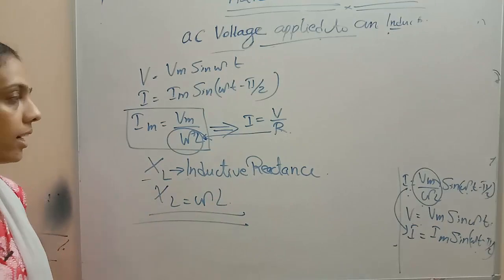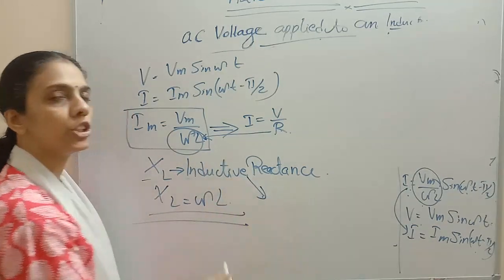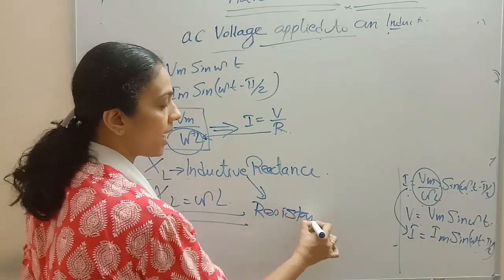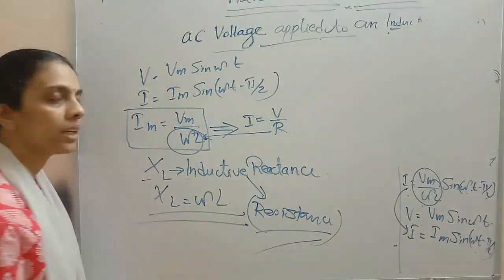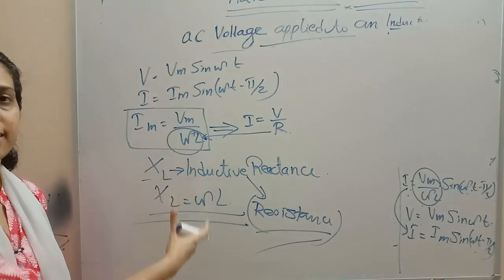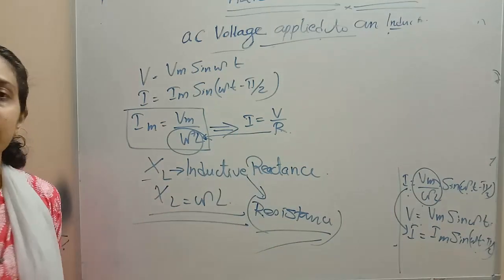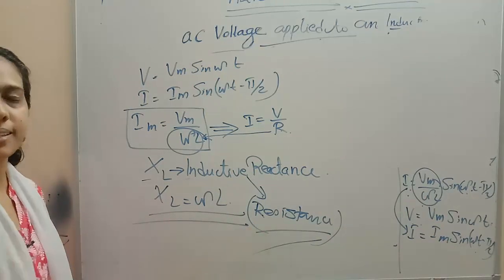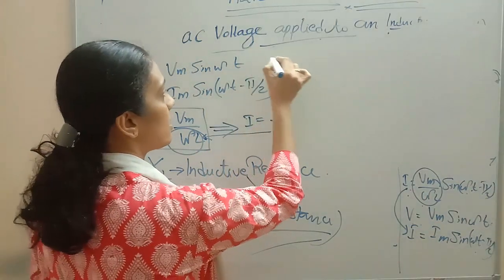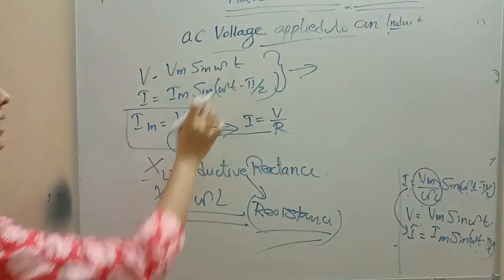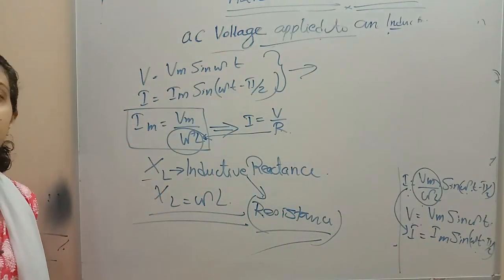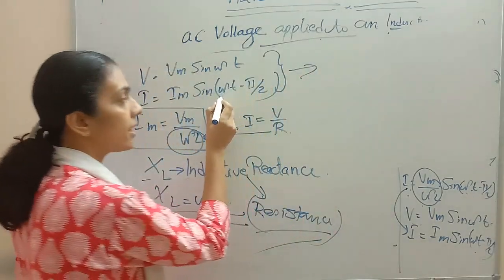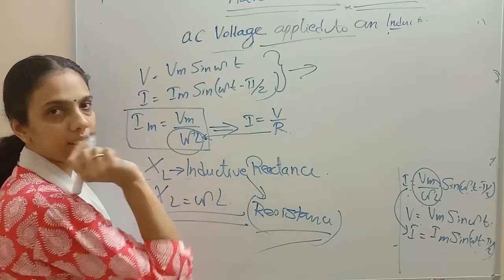XL equals ωL, and this has the same dimension and unit as resistance. Inductive reactance in an AC circuit — if we use an inductor instead of resistance, we get inductive reactance which has the same dimensional unit as resistance. So for our equations: v equals Vm·sin(ωt) but current i equals Im·sin(ωt − π/2), meaning current is lagging behind the voltage by a factor of π/2.